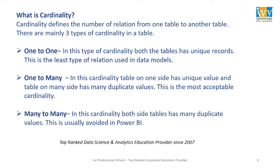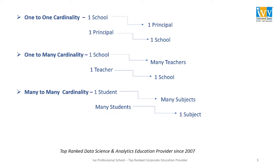Next is many-to-many. In this cardinality, both sides of the table have duplicate values. Many-to-many cardinality is usually avoided in Power BI because it leads to inconsistent results in the data model. We would also have to build more complex DAX measures to reach our desired result. So it is suggested not to use a many-to-many relationship unless it is very much needed. For example, one student can learn many subjects in a school, and many students can learn one subject — this is an example of many-to-many.